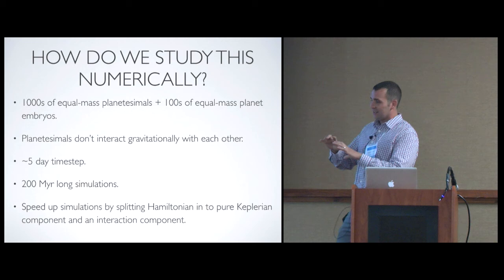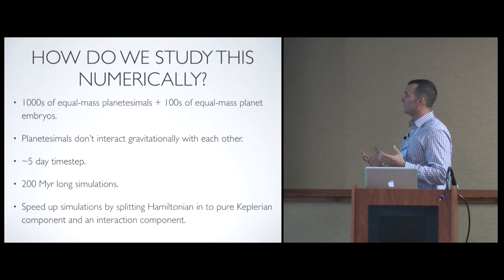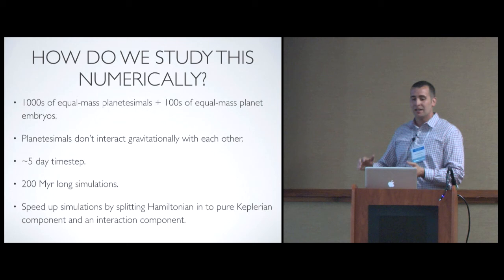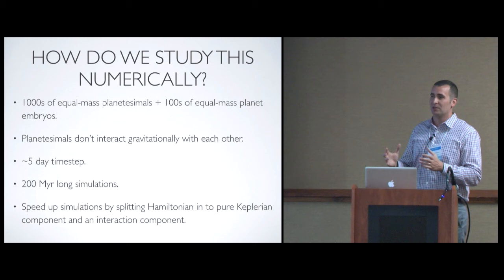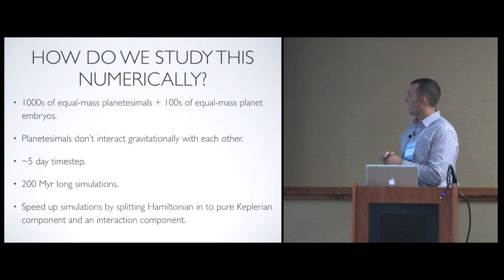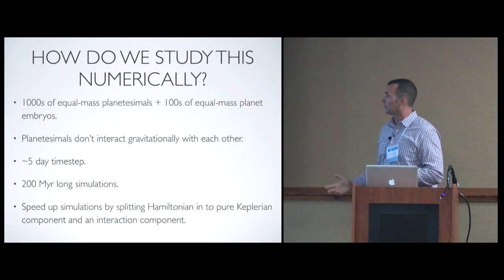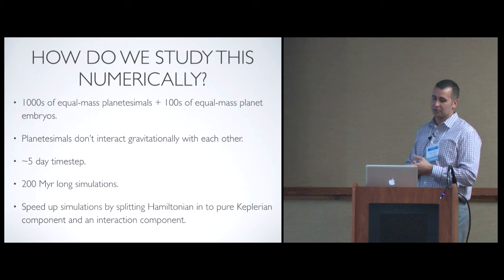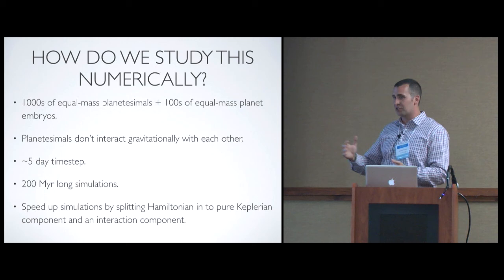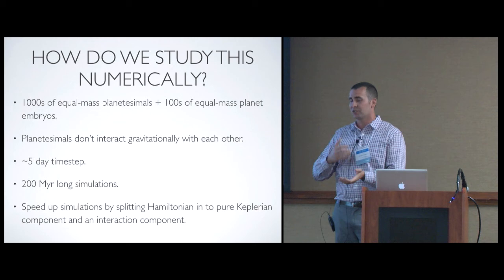So we study this process numerically. We obviously can't model the terrestrial disk, which is made in reality of millions and millions of objects, so we have to break it down into that bimodal mass distribution we talked about earlier. We use tens to hundreds of usually equal massed planet embryos embedded in a sea of planetesimals. We use thousands of planetesimals, and we assume that they don't interact gravitationally with one another. They only interact gravitationally with the planet embryos. We use about a five-day time step, and we run about 200 million year long simulations.